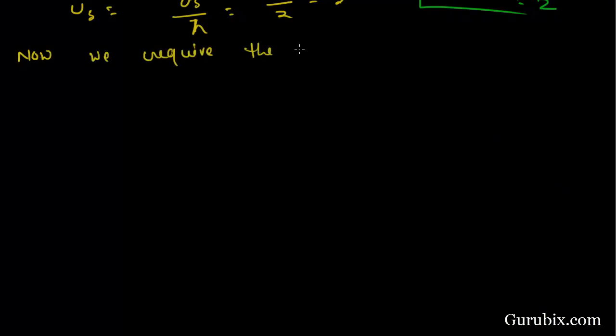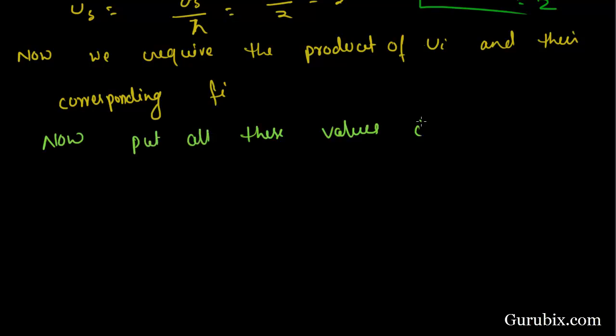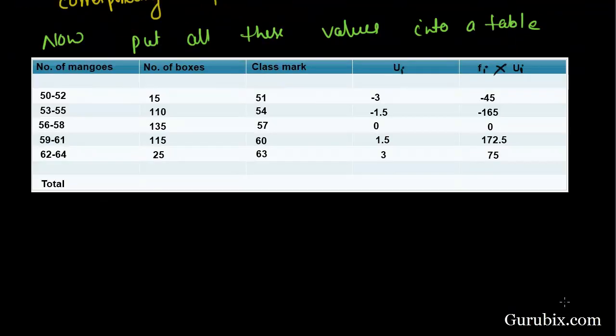Now, we require the product of ui and their corresponding fi. Put all these values into a table. Let's draw a table. In this table, there are four columns. First column is number of mangoes. Second column is number of boxes which is our fi. Third column is class mark which is xi. Fourth column is ui which is equal to di upon h. And fifth column is the product of fi with ui.